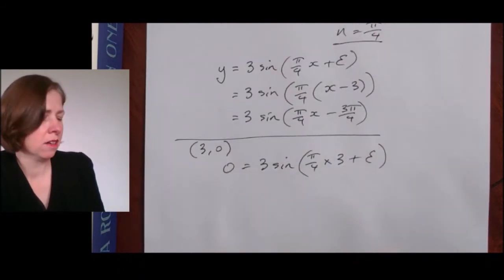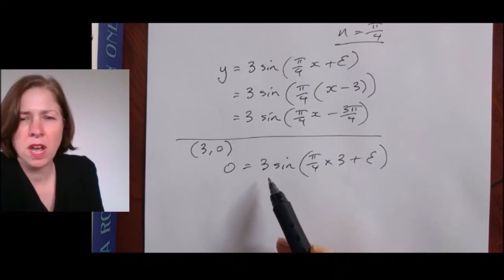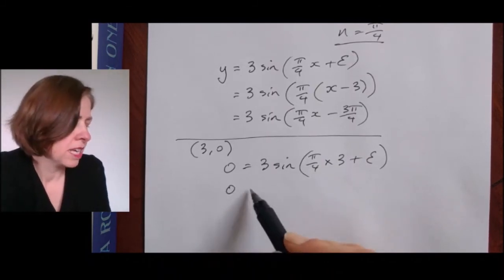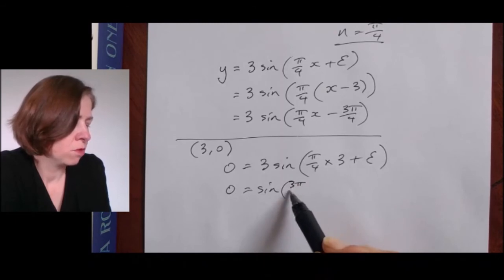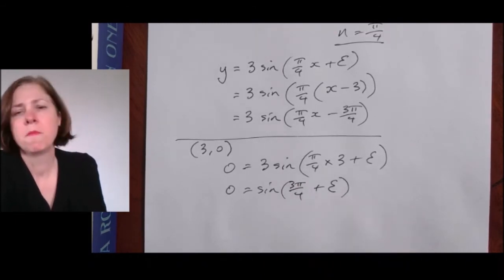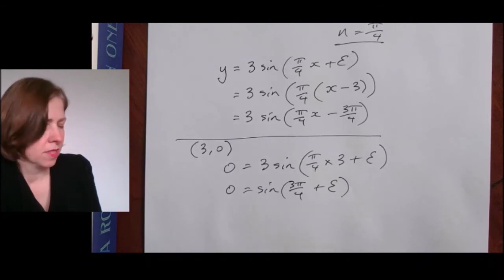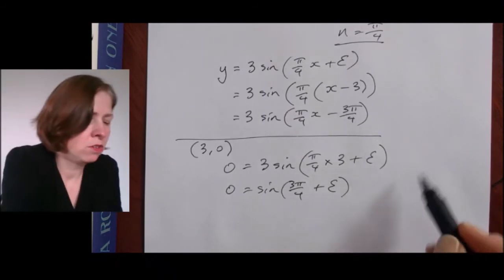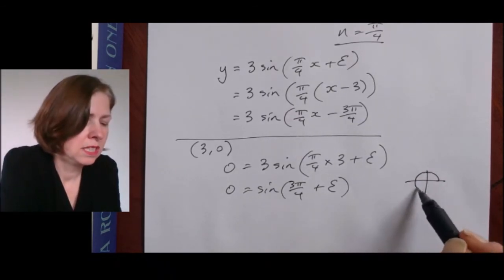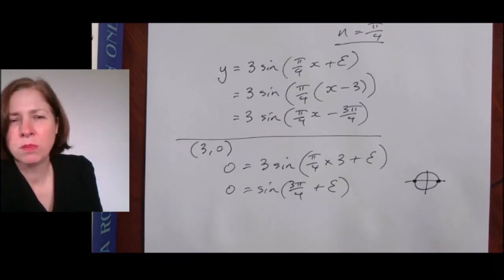Solving that: the three won't affect it — I divide both sides by three and get zero equals sine of (three pi on four plus epsilon). When is sine of an angle equal to zero? Sine is my y-value on the unit circle, so it happens at multiples of pi.